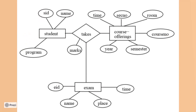The student has taken a particular course. You mention the course attributes and exam attributes. This takes a relationship between these three entities. Marks are not only for the student, not only for the course, and not only for the exam — marks is a shared attribute. Since the student has given a particular course and exam, we have not assigned marks to any single entity; rather, we have made it an attribute of the relationship.